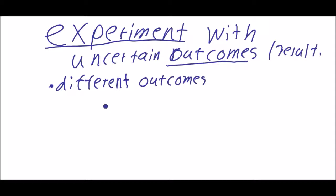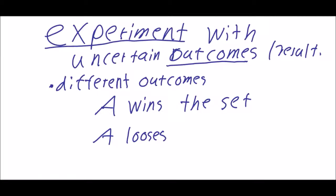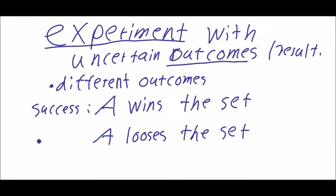So what are the different outcomes in our case? One would be: A wins the set. The other would be: A loses the set, or equivalently B wins the set. You cannot have both at the same time. We will call the first one success from the point of view of A, and the other outcome failure.